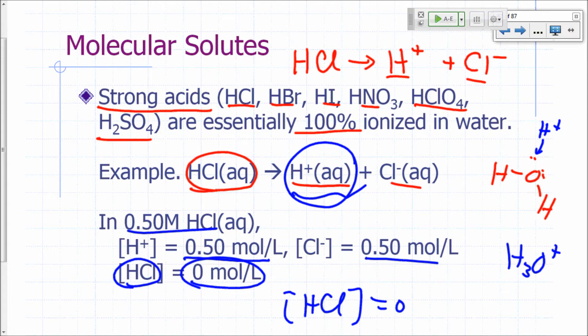When you use brackets around symbols, we write those around symbols for molecules or ions that are in solution. If you have the formula of a salt—a cluster of ions—generally those concentrations are going to be 0.